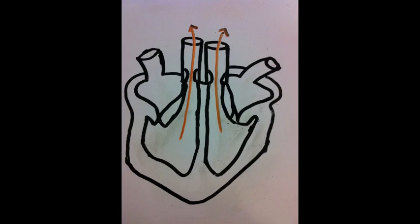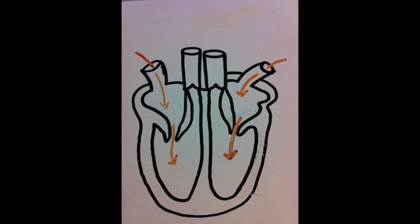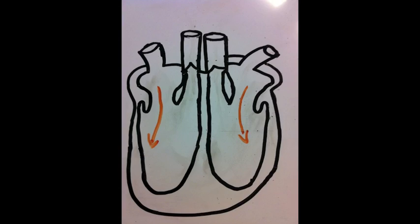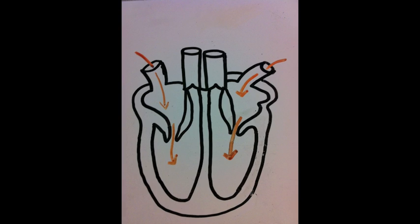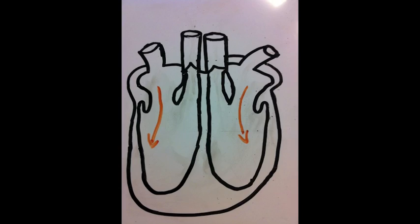Atrial systole is the next step in the cycle. It pumps remaining blood into the ventricles. The ventricles will stay relaxed.